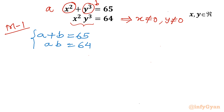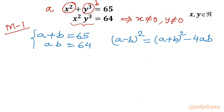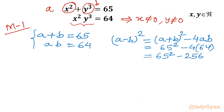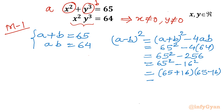In this method I am solving using an algebraic formula. The identity is: a minus b whole square equals a plus b whole square minus 4ab. Putting the values: 65 squared minus 4 times 64, which gives 65 squared minus 256, which equals 65 squared minus 16 squared. Using difference of two squares, that is 65 plus 16 times 65 minus 16, giving 81 times 49.